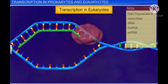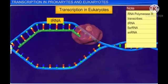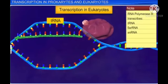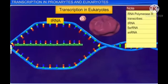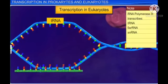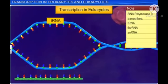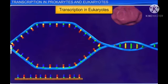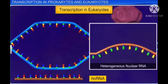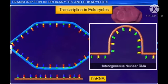RNA polymerase 3 is responsible for the transcription of tRNA, 5S ribosomal RNA or 5SrRNA, and small nuclear RNA or snRNA. The processing of HnRNA marks another major difference between prokaryotic and eukaryotic transcription.